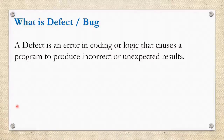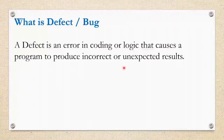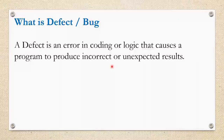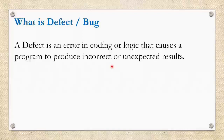A defect is an error in coding or logic that causes a program to produce incorrect or unexpected results. A person makes an error, which creates a fault in software, and that can cause a failure in operation. Software is a collection of programs and works well only when you execute those programs and remove the errors. A program must be without errors for the software to work properly. So removing defects from the software is necessary.